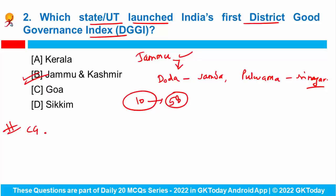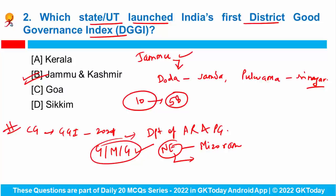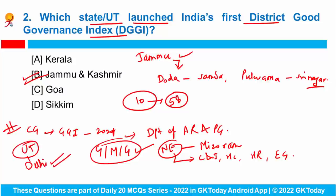The central government has issued the good governance index for 2021, prepared by the Department of Administrative Reforms and Public Grievances. Gujarat, Maharashtra, and Goa topped this list. In the North Eastern category, Mizoram topped, performing well in commerce and industry, healthcare, public health, human resource development, and economic governance. Among union territories, Delhi emerged as the best.